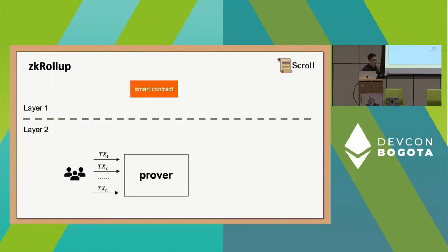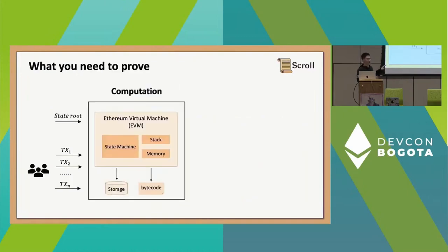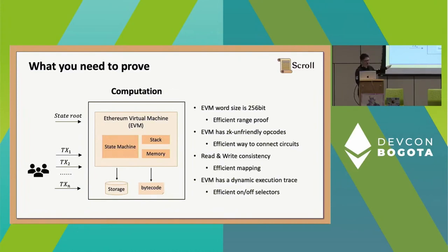Now let's look at what we are using in ZK-Rollup. The idea behind ZK-Rollup is that you send all transactions to a layer-2 prover, which generates a proof and posts it on-chain with the necessary data for verifying this proof. The proof system really matters in ZK-Rollup because your prover time, prover cost, and proof size all influence the money you spend per transaction, and verification cost influences the gas you spend. For a general purpose ZK-Rollup, you need to think about what computation you are executing — which is the EVM execution logic.